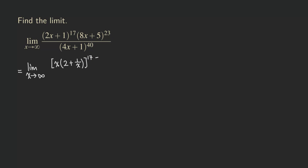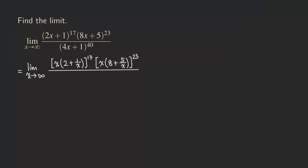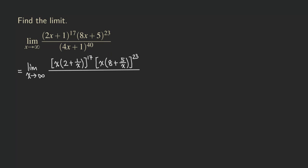Same thing for the other factor: I'm going to factor out the x and get x times (8 + 5/x), with a 23rd power outside the brackets. Same idea for the denominator: factor out x to get x times (4 + 1/x), with a 40th power on the outside.